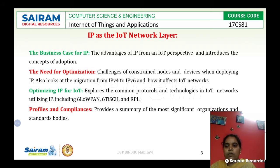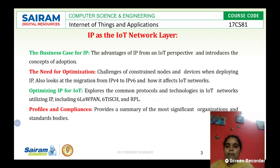The first concept here is IP as the IoT Network Layer, which includes various specifications. The first perspective is the business case for IP, which is the main concept we are going to discuss. We will also discuss the need for optimization — covering various challenges and how we can optimize IP for IoT — as well as profiles and compliances.